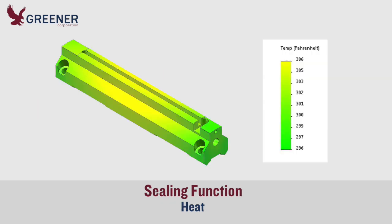The function of heat is to melt the sealant layer of the packaging film and bond the film together. The makeup of the film dictates the required heat levels, which should remain consistent across the sealing jaw face to produce an even, secure bond.